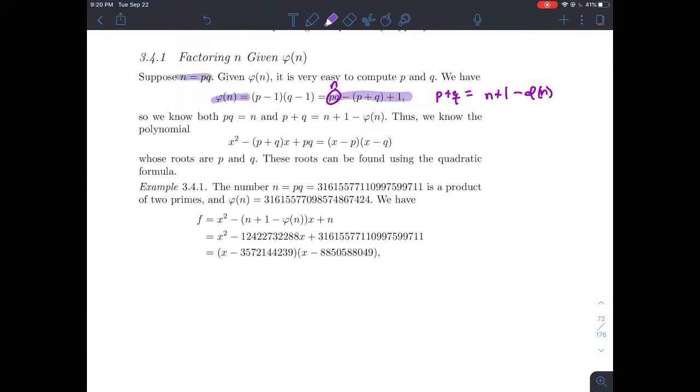If you've got n is equal to p times q, you want to make sure n is so big, the computing phi of n is not an easy task. In fact, you want it to be damn near impossible. Because this shows that if somebody could compute phi of n, then your n is not a very good, not a good n for RSA encryption.